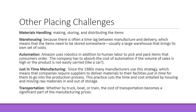In the 1980s, manufacturers began using the just-in-time manufacturing strategy, which requires companies that supply goods to deliver their materials to the facility just in time to go into the production process. This practice cuts the time and cost of housing and moving raw materials in and out of storage. Toyota was one of the first companies to use just-in-time engineering — they need tires, interior upholstery, engines, and metal, all timed perfectly to arrive before employees showed up, with various deliveries throughout the day reducing their need to warehouse anything.